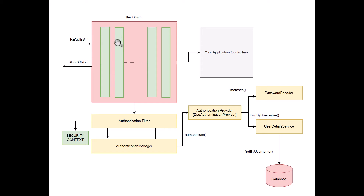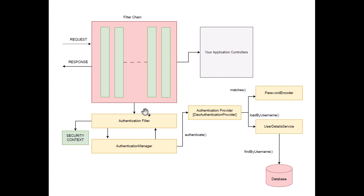These login requests will contain a username and password, or any sort of authentication information that needs to be validated. Filters are nothing but some code that resides before the controller — your request has to pass through them. The Authentication Filter intercepts the authentication requests, grabs the username and password, and creates an Authentication object from them.